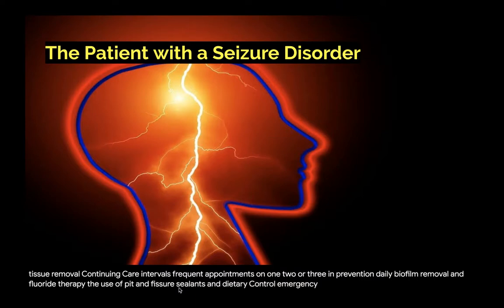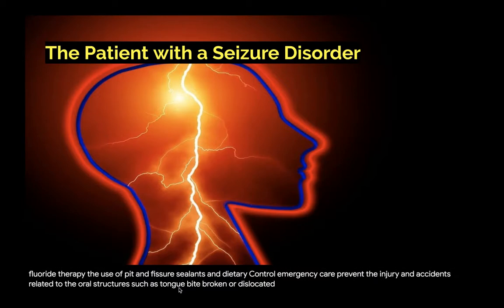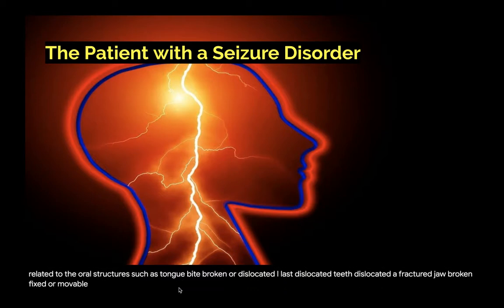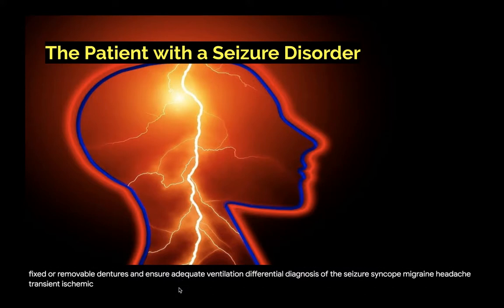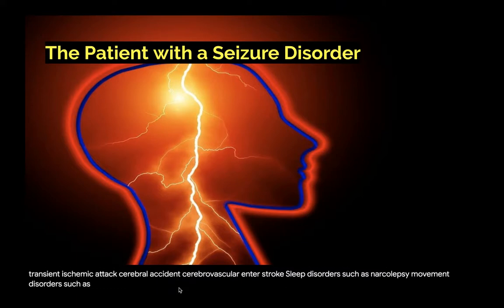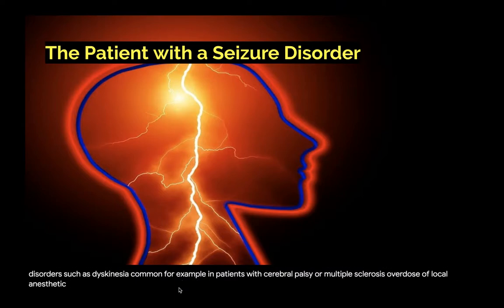Emergency care aims to prevent injury and accidents to oral structures such as tongue bite, broken or dislocated teeth, dislocated or fractured jaw, broken fixed or movable dentures, and to ensure adequate ventilation. Differential diagnosis of a seizure includes syncope, migraine headache, transient ischemic attack, cerebrovascular accident or stroke, sleep disorders such as narcolepsy, movement disorders such as dyskinesia (common in cerebral palsy or multiple sclerosis), overdose of local anesthetic, hypoglycemia or insulin overdose in a patient with diabetes, and hyperventilation.